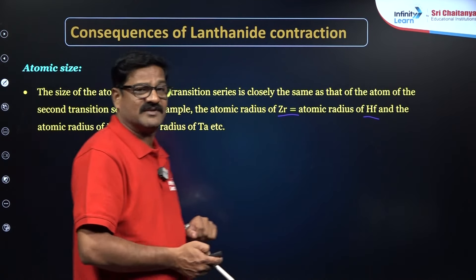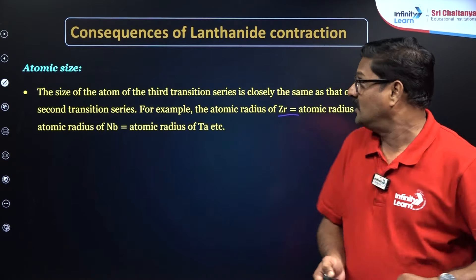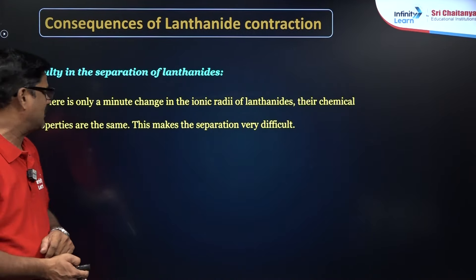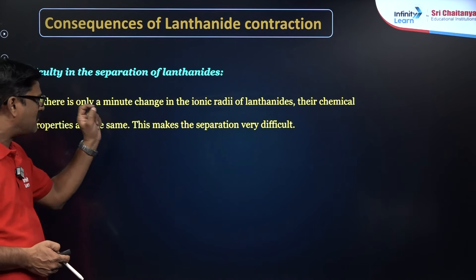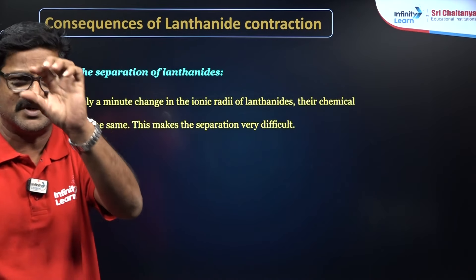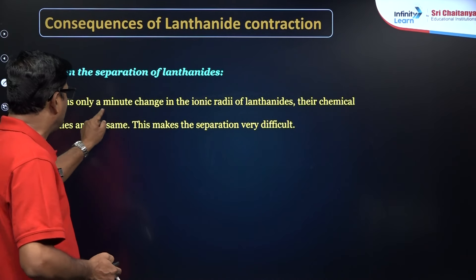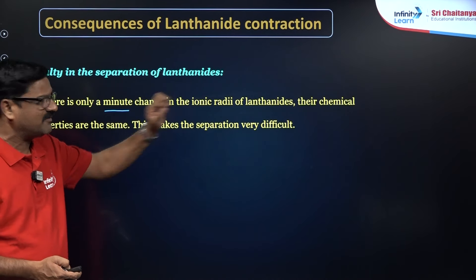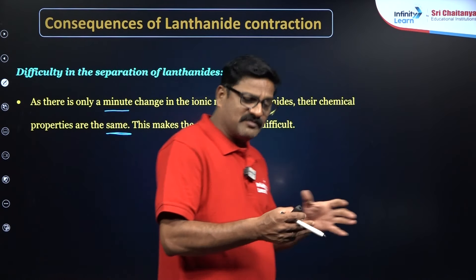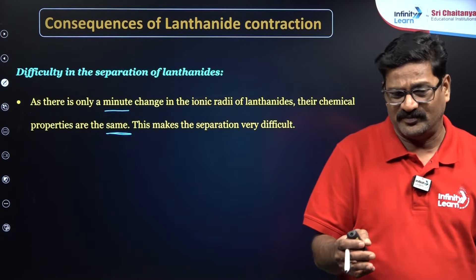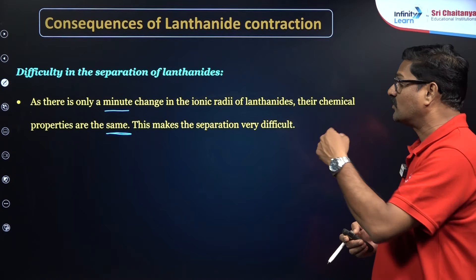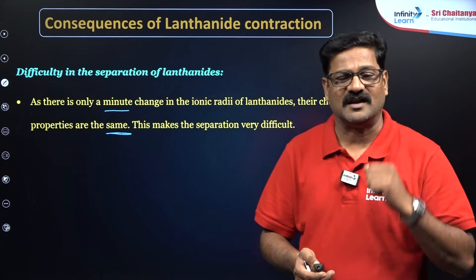Another consequence of lanthanide contraction is the difficulty in separation of lanthanide elements. Since there is only a minute, steady decrease in the atomic size, the ionic radii of lanthanides are nearly the same, meaning their chemical properties are nearly the same. When their chemical properties are nearly the same, it is very difficult to isolate them. This is one more consequence of lanthanide contraction.